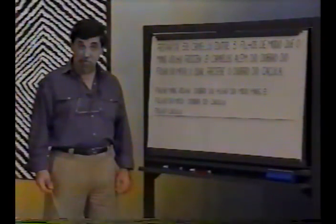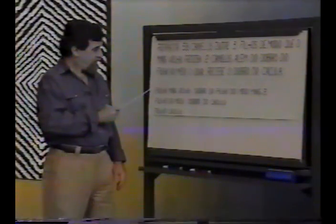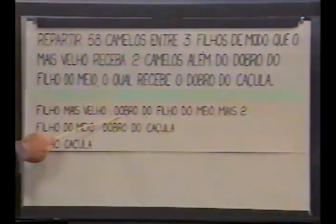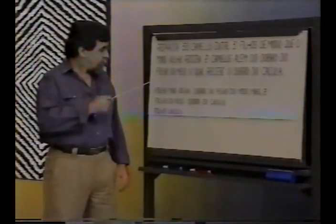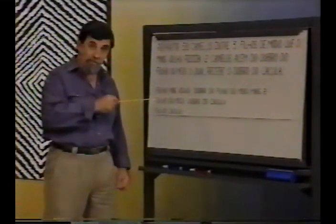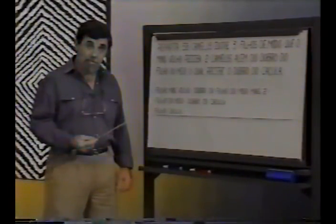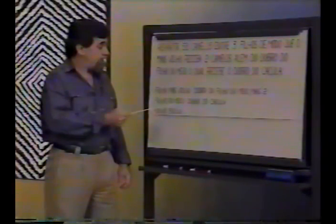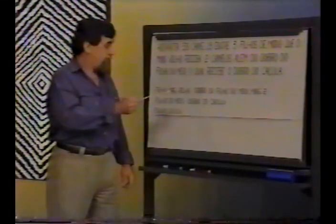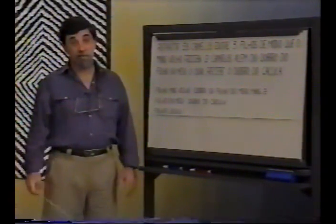O problema parece mais complicado do que de fato é, pelo próprio enunciado. Ajuda fazer um esqueminha: o filho mais velho deve receber o dobro do filho do meio mais 2, e o filho do meio deve receber o dobro do caçula. A gente tem que descobrir quantos camelos cada filho deve receber. Mas se a gente descobrir quantos camelos cabem ao filho caçula, o resto é fácil, porque o dobro disso é o que cabe ao filho do meio, e o dobro disso mais 2 é o que cabe ao filho mais velho.